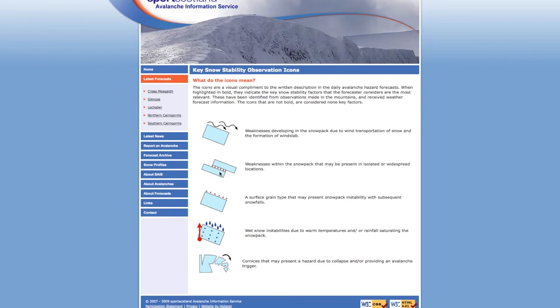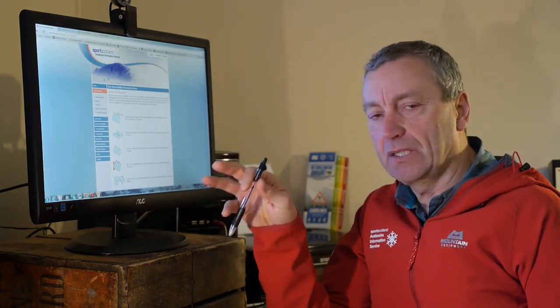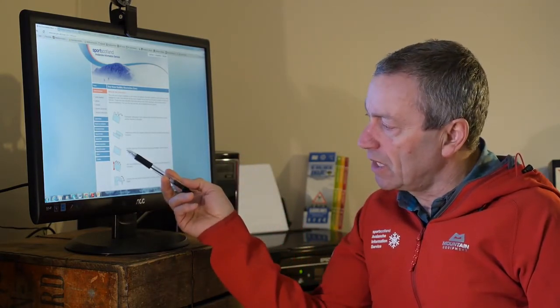The next is the block with surface grain type that may present snowpack instability with subsequent snowfalls. And again this is quite key because this depends on your observations on the day-to-day basis. So this could be a surface grain which could be surface hoar or graupel which may be lying on the surface and is of no consequence now, but if we get snow on top of that, then that will produce a very weak layer.